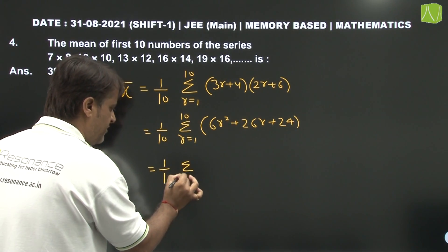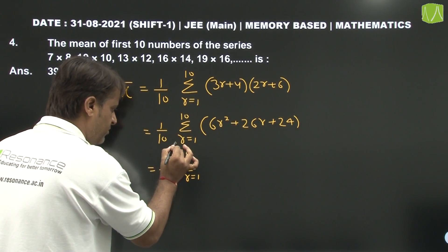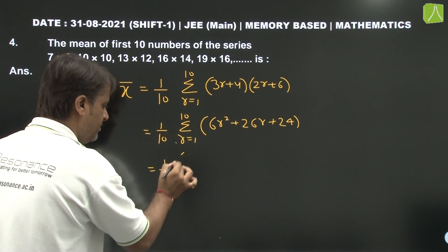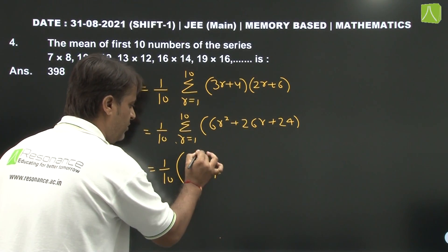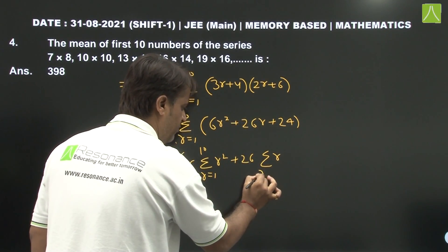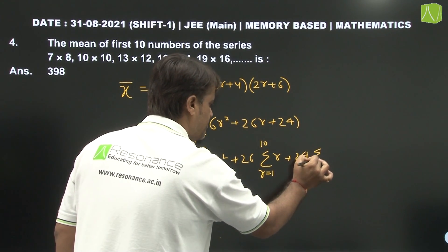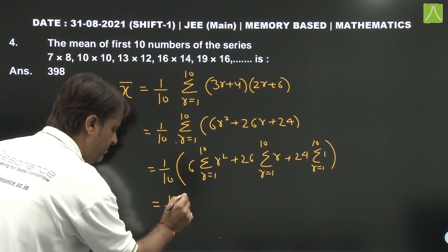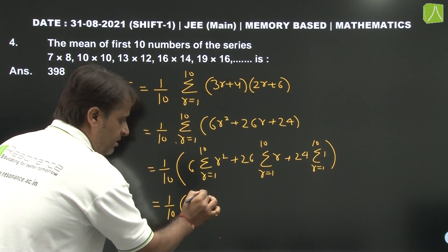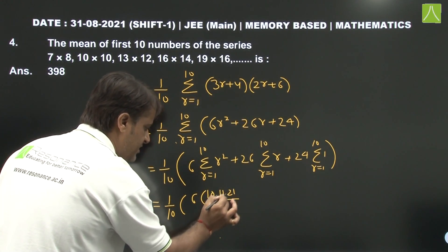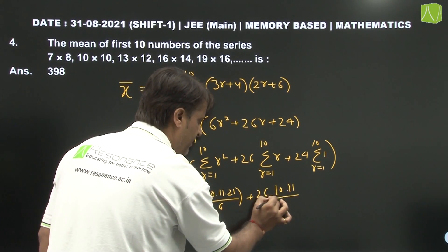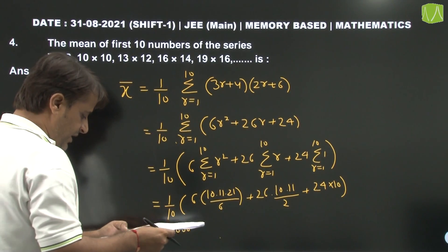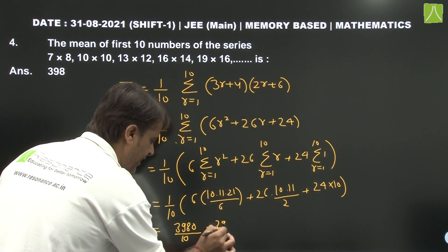Computing: (1/10) times [6 times (10 times 11 times 21 divided by 6) plus 26 times (10 times 11 divided by 2) plus 24 times 10]. Simplifying gives 3980 divided by 10, so the answer is 398.